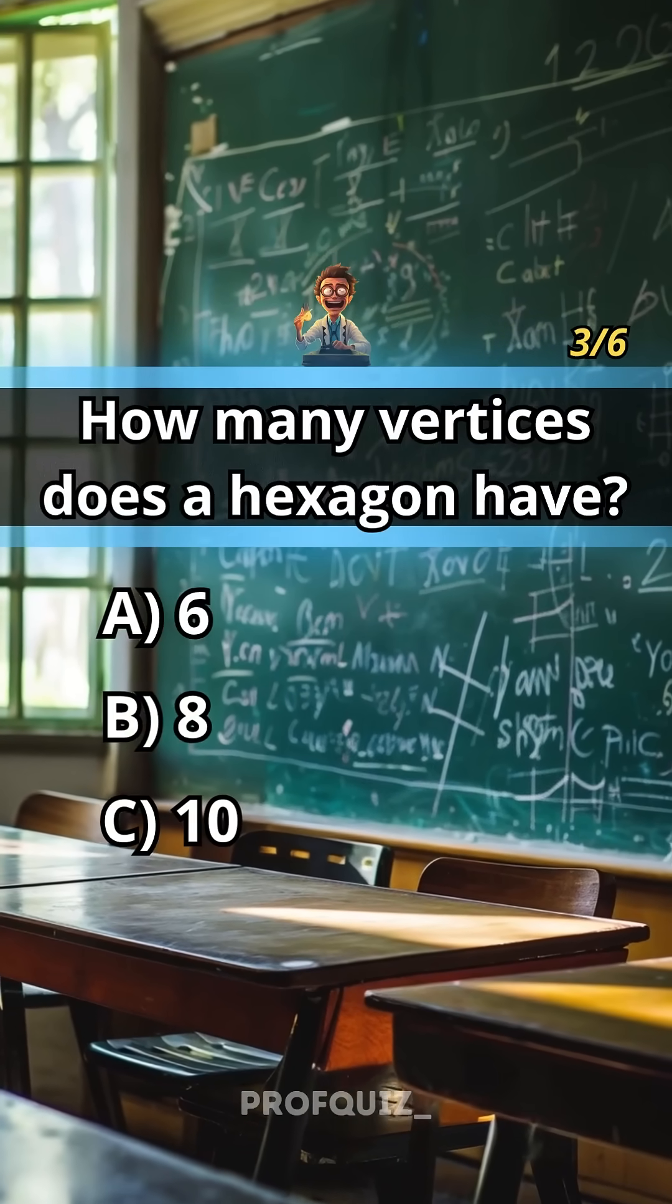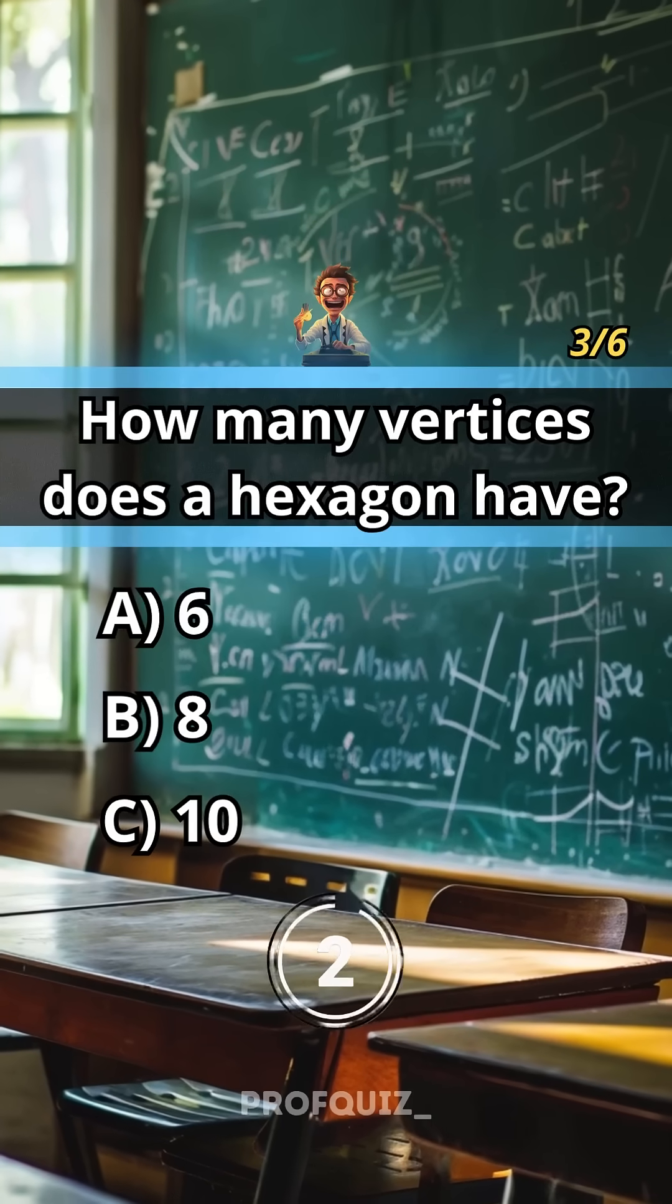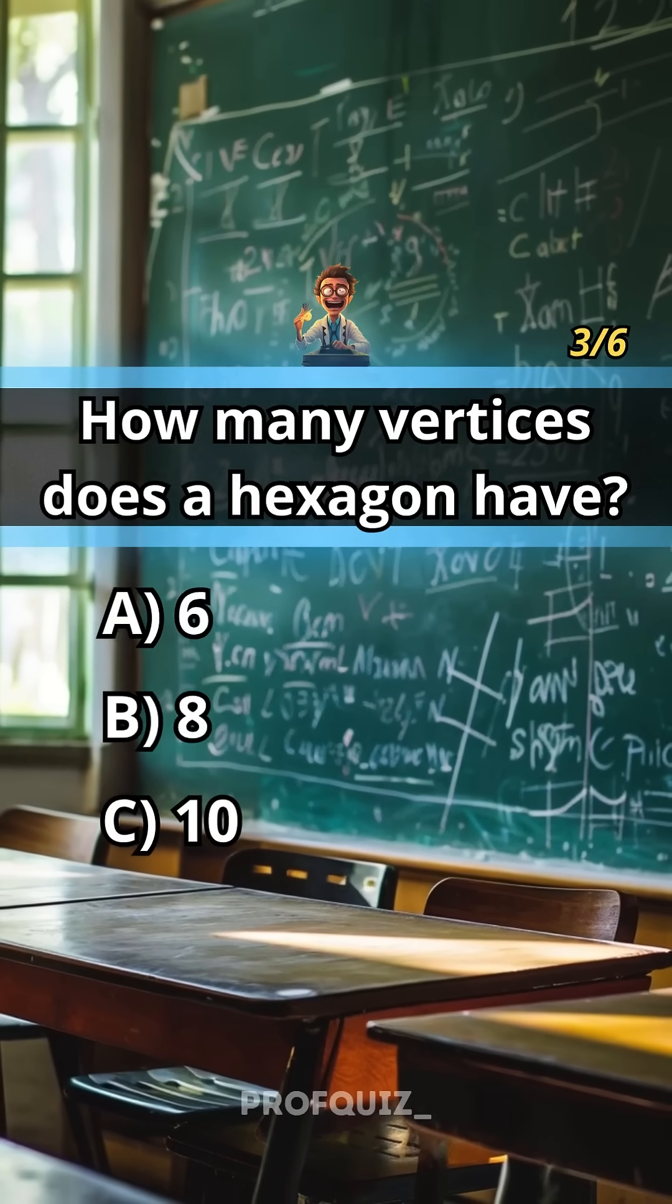How many vertices does a hexagon have? Subscribe for more quizzes. Answer A, 6.